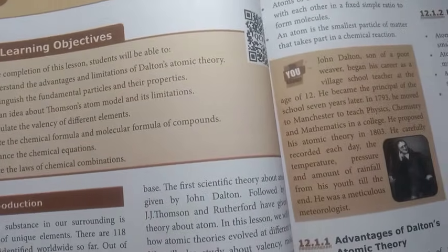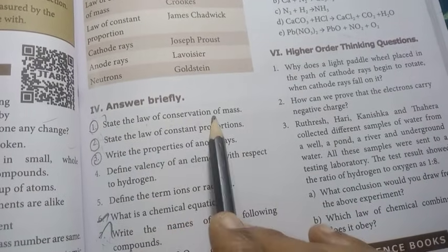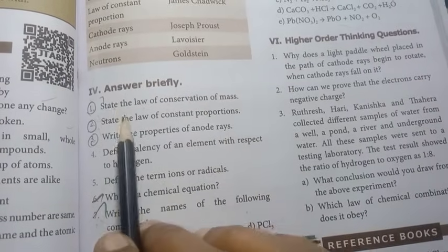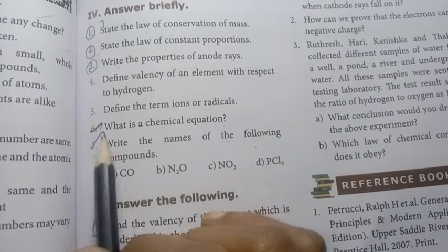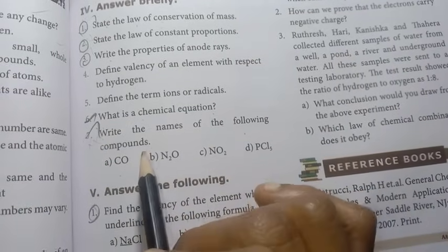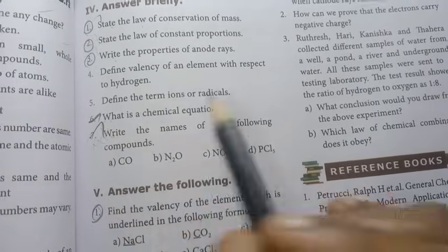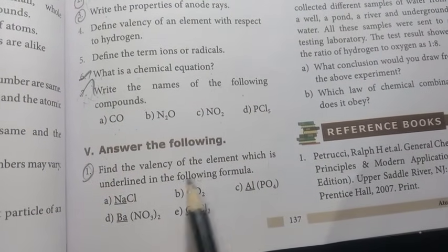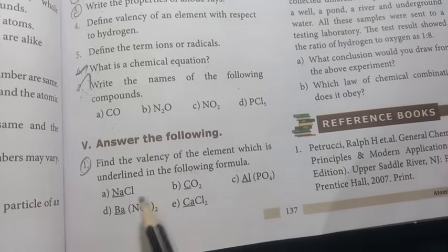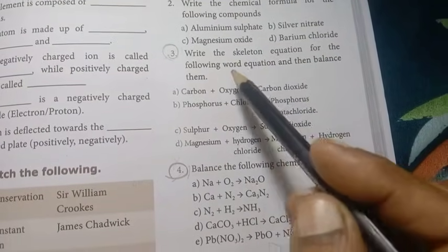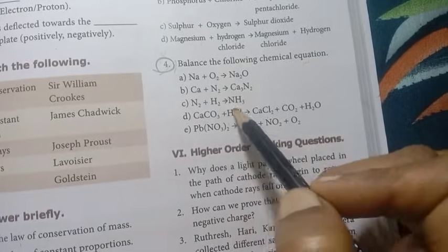Unit 12: Atomic Structure, page number 137. Answer briefly: State the law of conservation of mass — important. State the law of constant proportions — important. Write the properties of anode rays — first, second, third important. What is a chemical equation? — previous year question. Write the names of the following compounds: CO, N₂O, NO₂, PCl₅ — previous year annual question. Find the valency of the element underlined in the following formula: NaCl. Write the skeleton equation for the following word equation. Balance the following chemical equation — important.